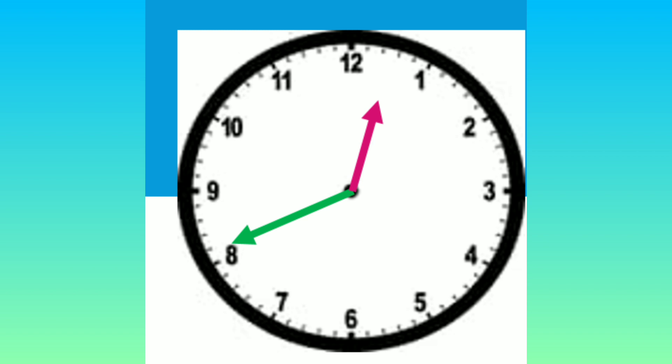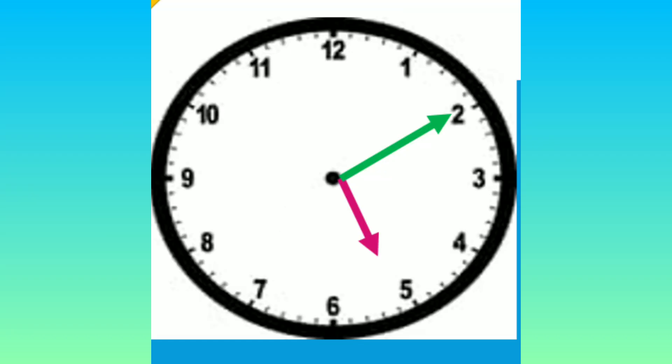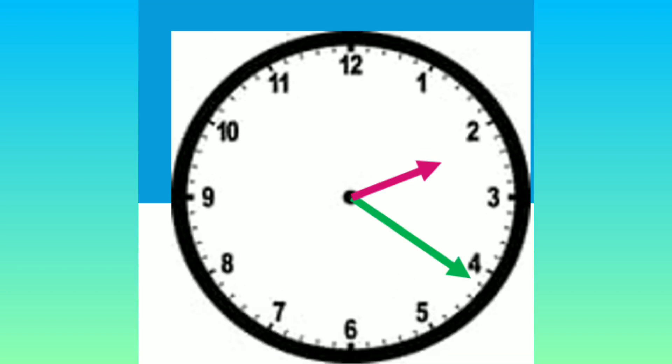Next example — look at the clock. What time is it? The time is twelve forty — twelve hours forty minutes. Now change to after four hours thirty minutes. What will be the time? Yes, the time is five ten — five hours ten minutes. Next example — look at the clock. The time is two hours twenty minutes.